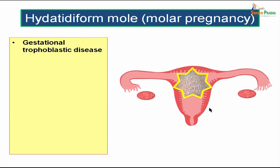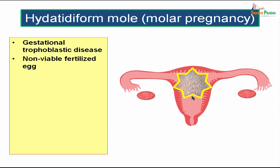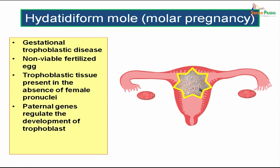Gestational trophoblastic disease means a disease arising from the trophoblast layer. It is a non-viable fertilized egg — fertilization has happened but this egg is not viable. The trophoblastic tissue is present but in the absence of female pronuclei. So there is no contribution from the female part. The paternal genes are regulating the development of trophoblast, which is why even after fertilization and the missing of the female pronuclei, you get the trophoblast. Such a condition is known as hydatidiform mole or molar pregnancy.